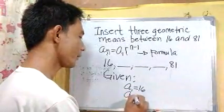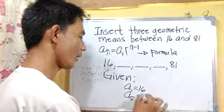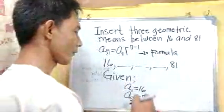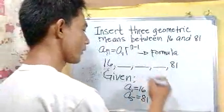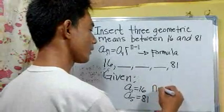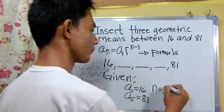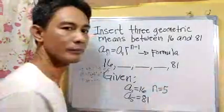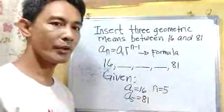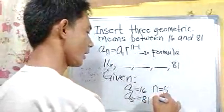Our last term, 81, is now our a sub 5, so a sub 5 equals 81. The number of terms n equals 5, and our common ratio r is unknown.